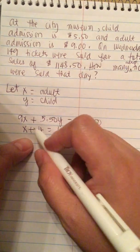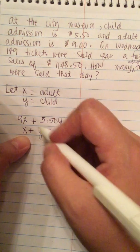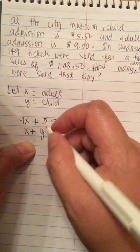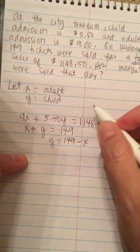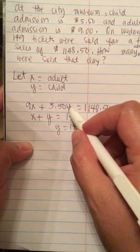We use the substitution method. It's easier. We solve this second equation to Y equals 149 minus X, so we can plug in 149 minus X for this Y.